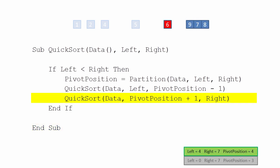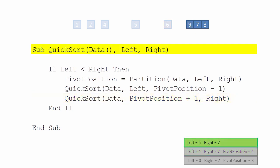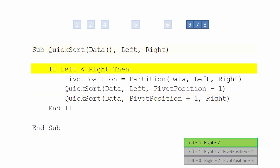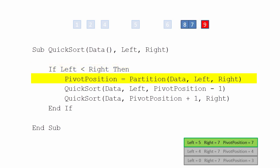The second invocation now has a right-side sublist to deal with. Quicksort is called again, passed a left pointer value of 5 and a right pointer value of 7. A list of three items means that left is indeed smaller than right, so the partition function does generate some more sublists.